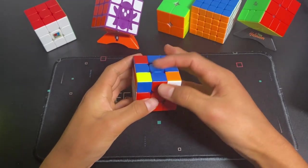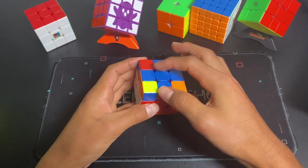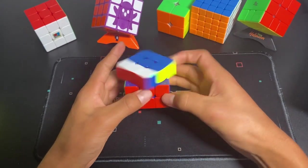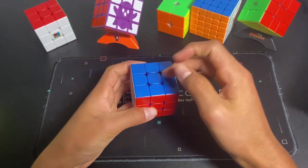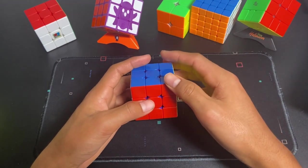OLL stands for the orientation of the last layer, which is to correct all of these pieces to create a face on the top side, like that. And you should be able to solve all of the cases in just one algorithm. So if you see this case, you automatically just put in an algorithm, and that side can be solved.